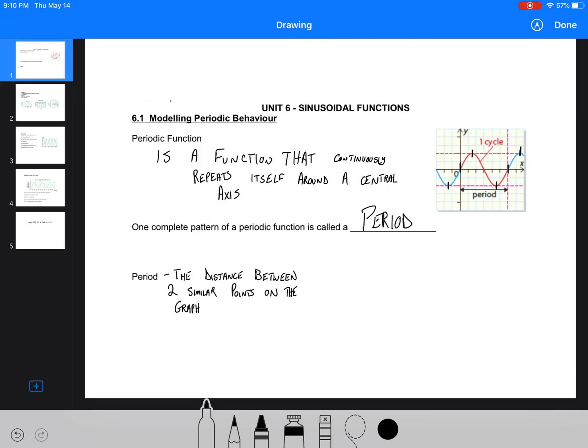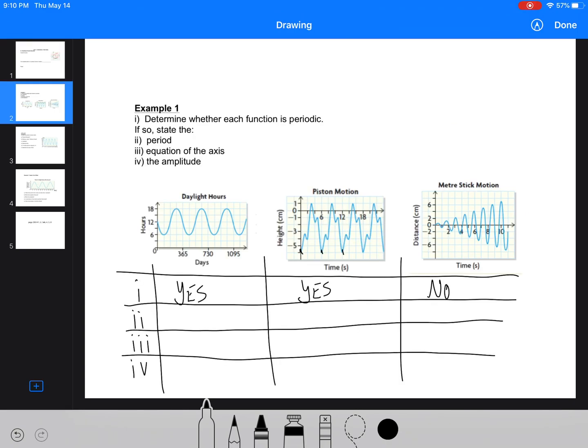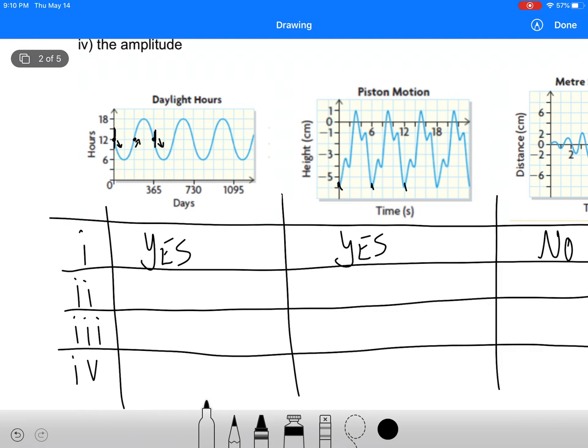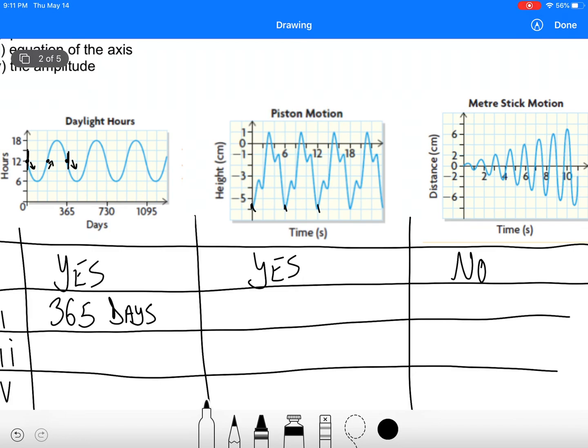The second one, state the period. So if we're looking at this cycle here, the graph, we're looking for one spot on the graph to a similar point. Now some people would go to this value because it's both equal to 12, but that's not actually similar because the graph is going down here and going up here. So we need a point at 12 hours that it's going down again. So one cycle is happening from here to here, or one period. So the period here is 365 days, or one year.